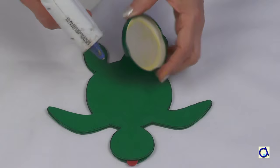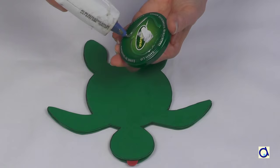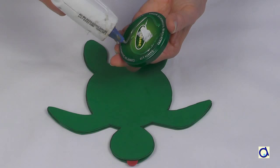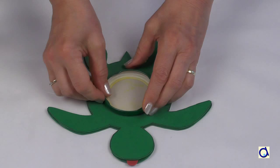Take a plastic or metallic jar lid and glue it in the center of the body of the turtle. The lid will serve as a base for the tea light candle while protecting it from the water that might flow over the foam.